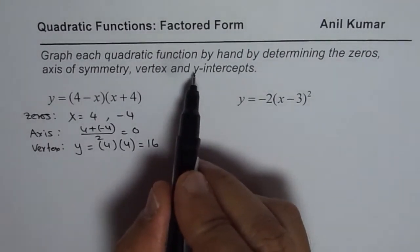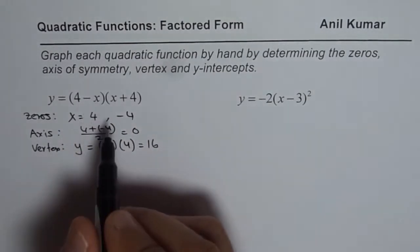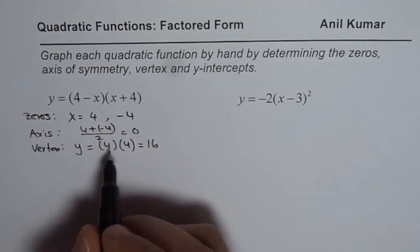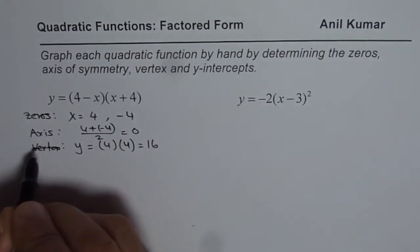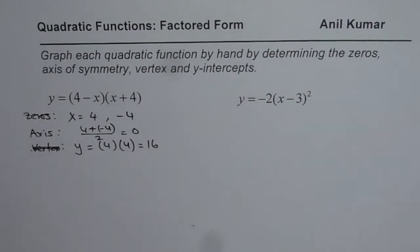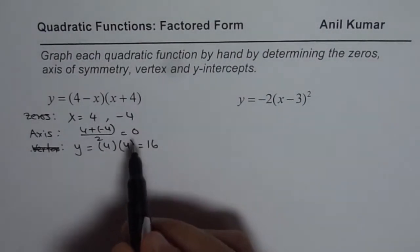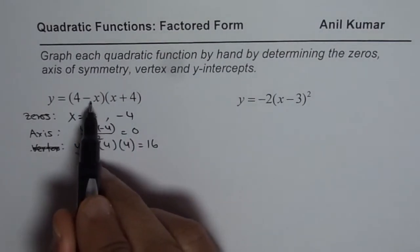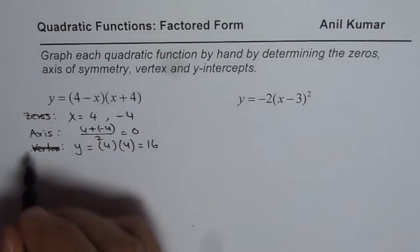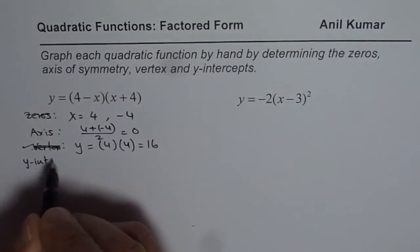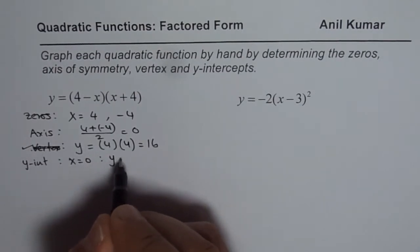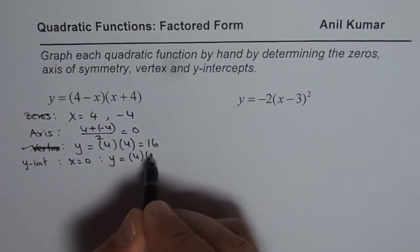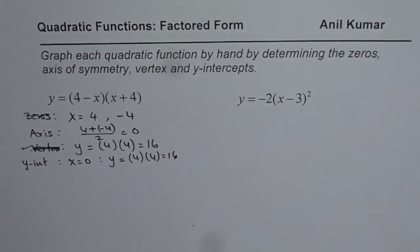You need to find y-intercept also. For y-intercept what we do is, we actually found the y-intercept here by substituting x as 0. So let me just correct this. Both are same. Because x is 0, so we substituted 0 and got that. For y-intercept also, we have to substitute x equals 0. If I write x equals 0, I get y equals 4 times 4, which is 16. So both vertex and y-intercepts are at the same point.